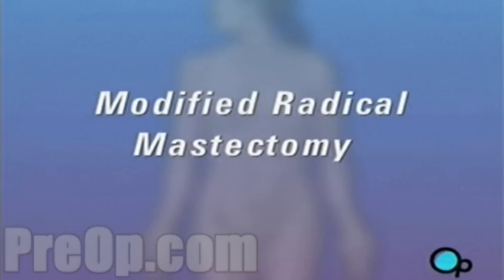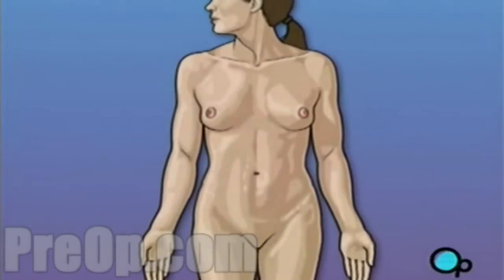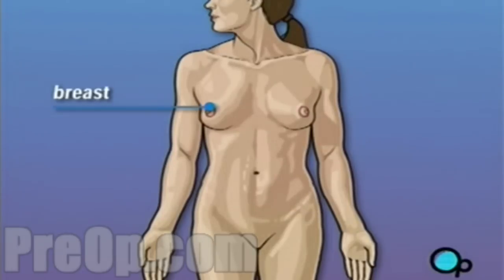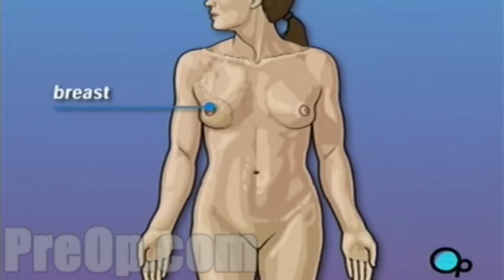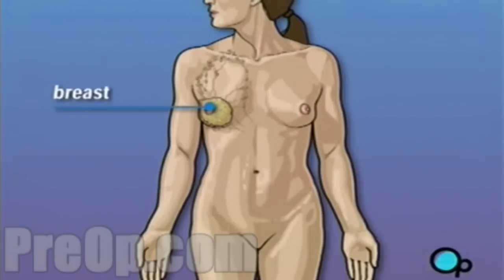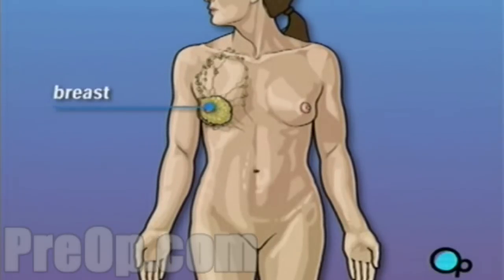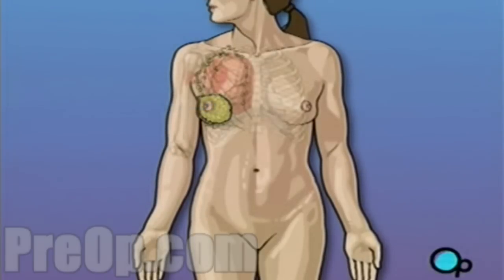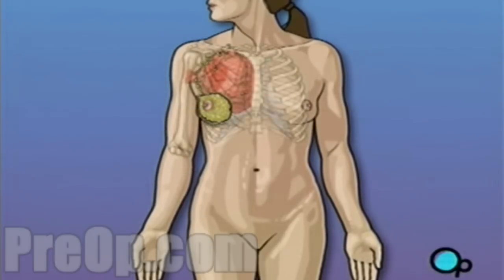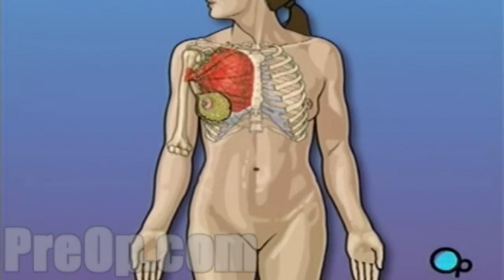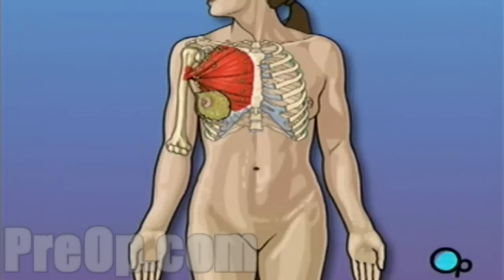Your doctor has recommended that you have a modified radical mastectomy, but what does that actually mean? Traditionally, a radical mastectomy called for the removal of the breast, surrounding tissue, and even the chest muscle below. A modified radical mastectomy is a procedure in which the breast and surrounding tissue are removed while leaving the chest muscle intact.